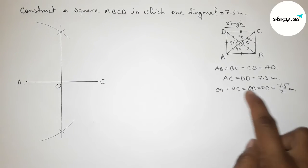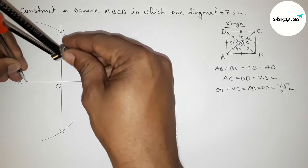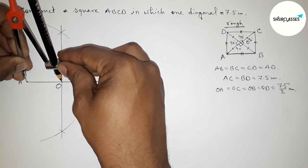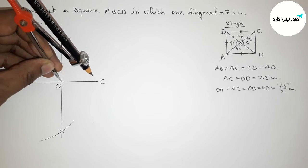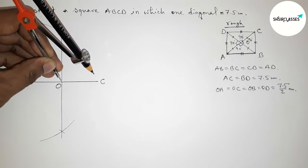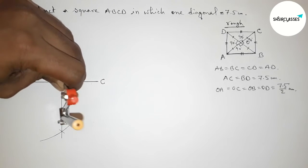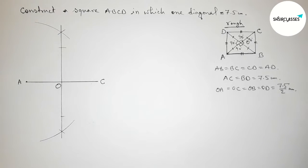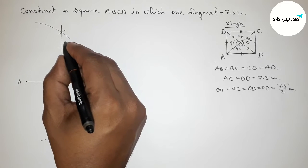The two lines bisect each other, and we mark the midpoint as point O. Now checking that OA equals OC — taking the length OA and verifying it equals OC. This is perfectly equal. So we mark points B and D on the perpendicular bisector at equal distances from O.